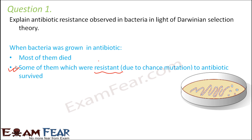Since this trait had a survival advantage, as per natural selection, it would be supported by nature. On further reproduction, more and more resistant bacteria will be produced. As a result, antibiotic resistance will be observed in bacteria because more resistant bacteria are being produced due to natural selection.